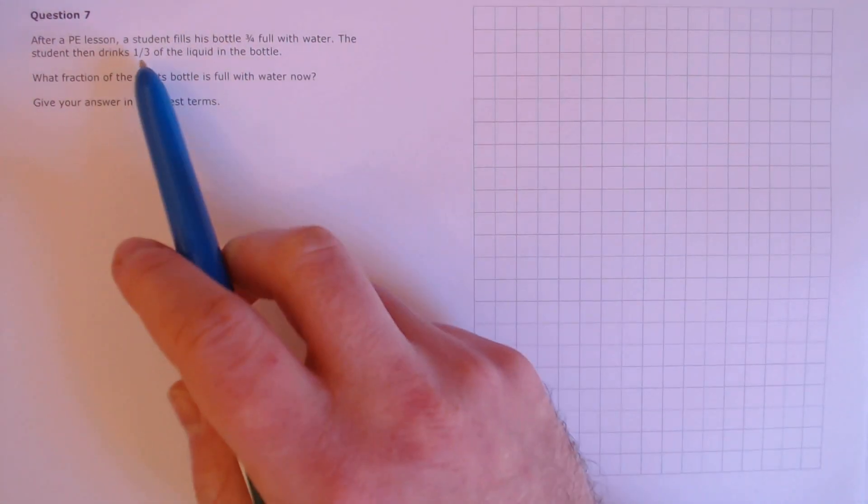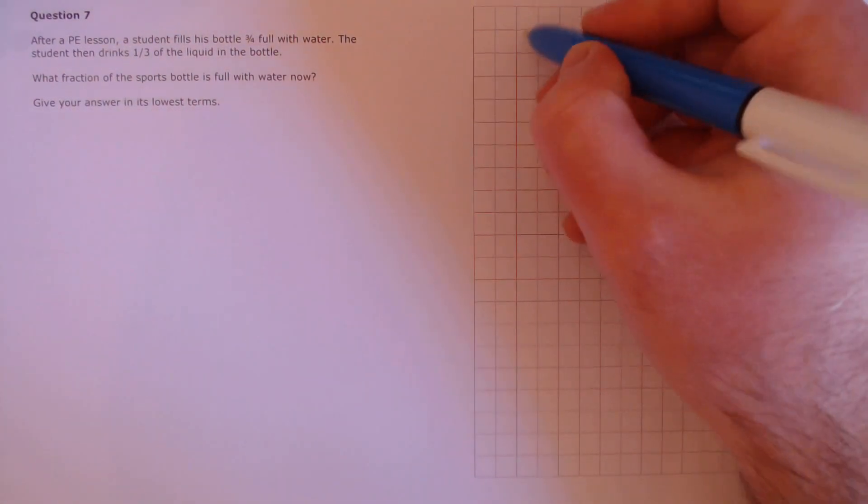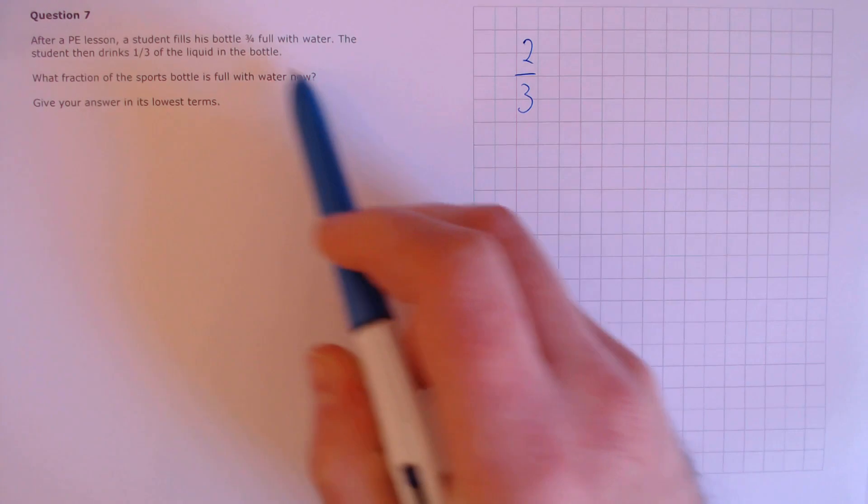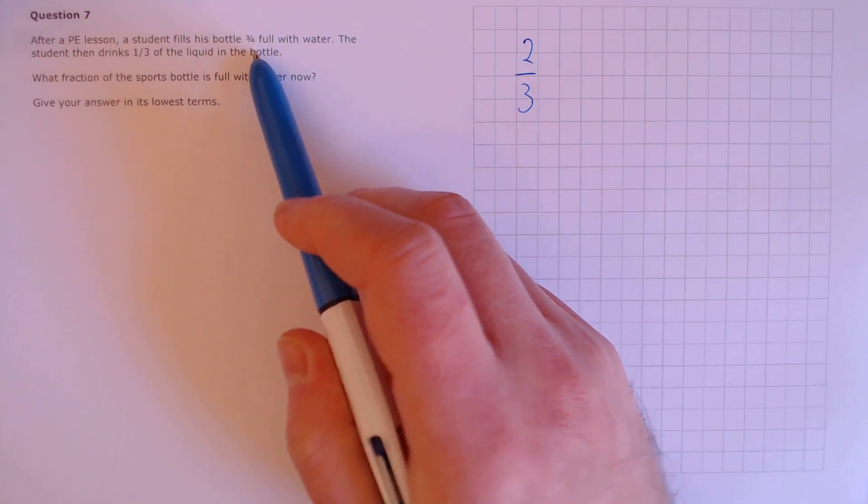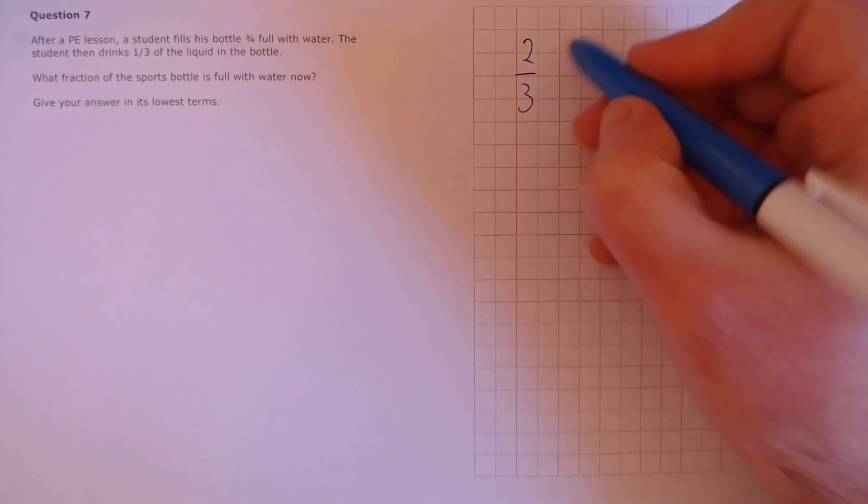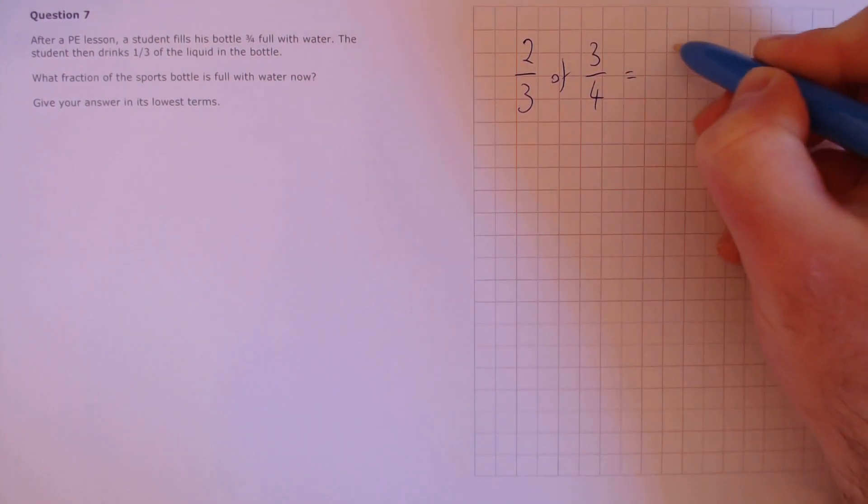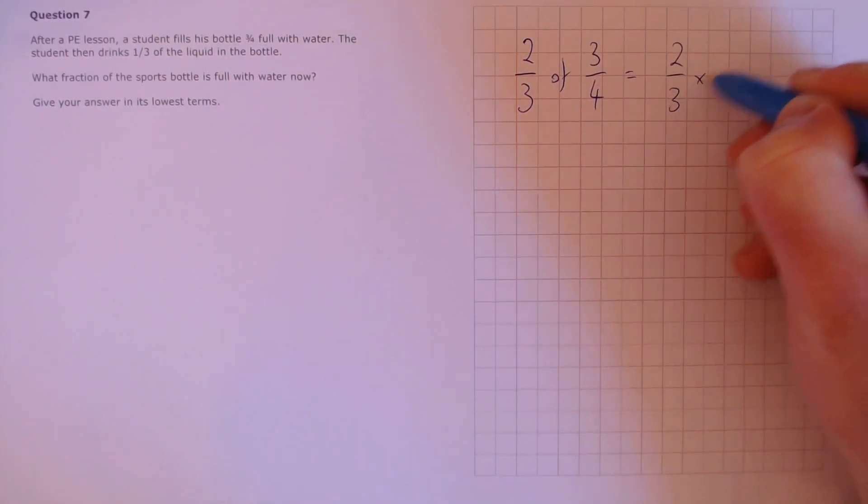If the student drinks one third of the liquid in the bottle, then the remaining amount of liquid in the bottle should be two thirds of whatever was there originally. We know that originally the bottle was three quarters full, so we're looking for two thirds of three quarters, which is the same as multiplying two thirds by three quarters.